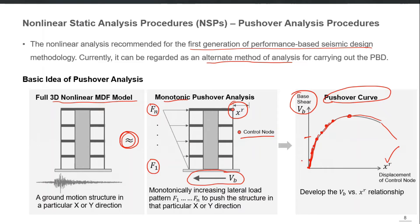Base shear is equal to the sum of all applied loading by horizontal equilibrium. This curve provides a lot of information: up to which loading level the structure remains almost linear elastic, and what will be the performance of the building at a particular roof displacement. If we know that a future earthquake is going to push our building to a certain level, we can directly read from the curve the condition of our structure. The program pushes the building step by step and saves all results at every push.